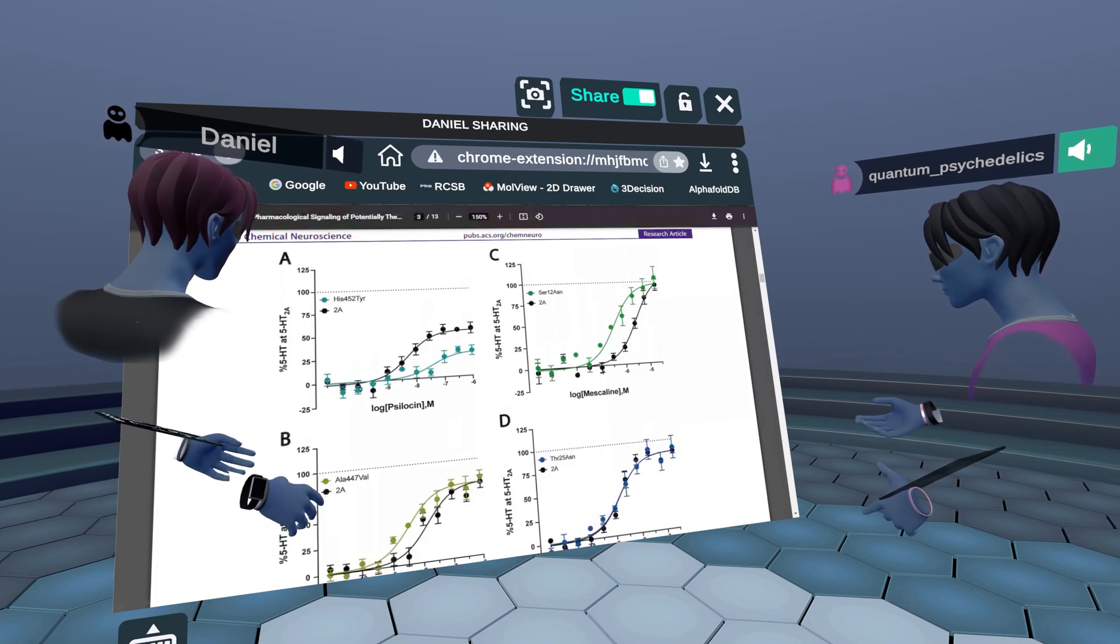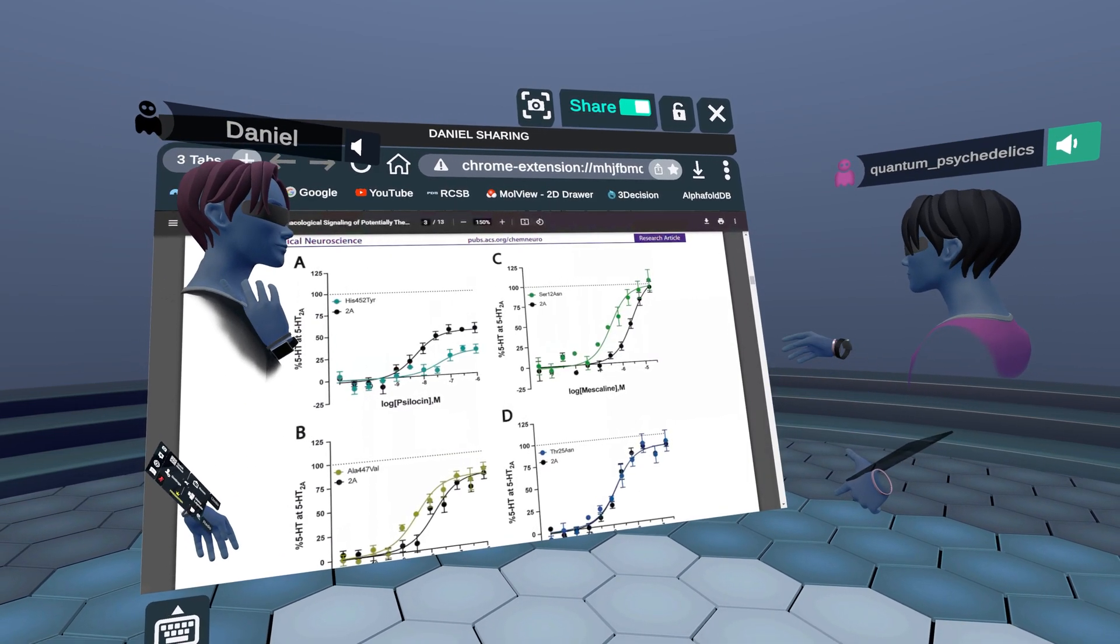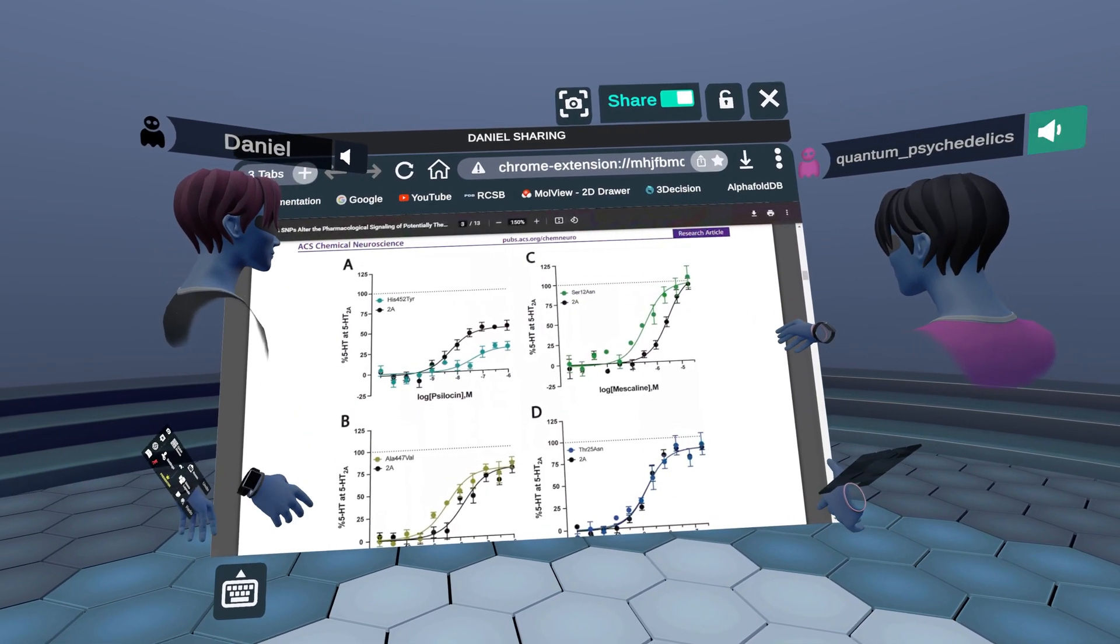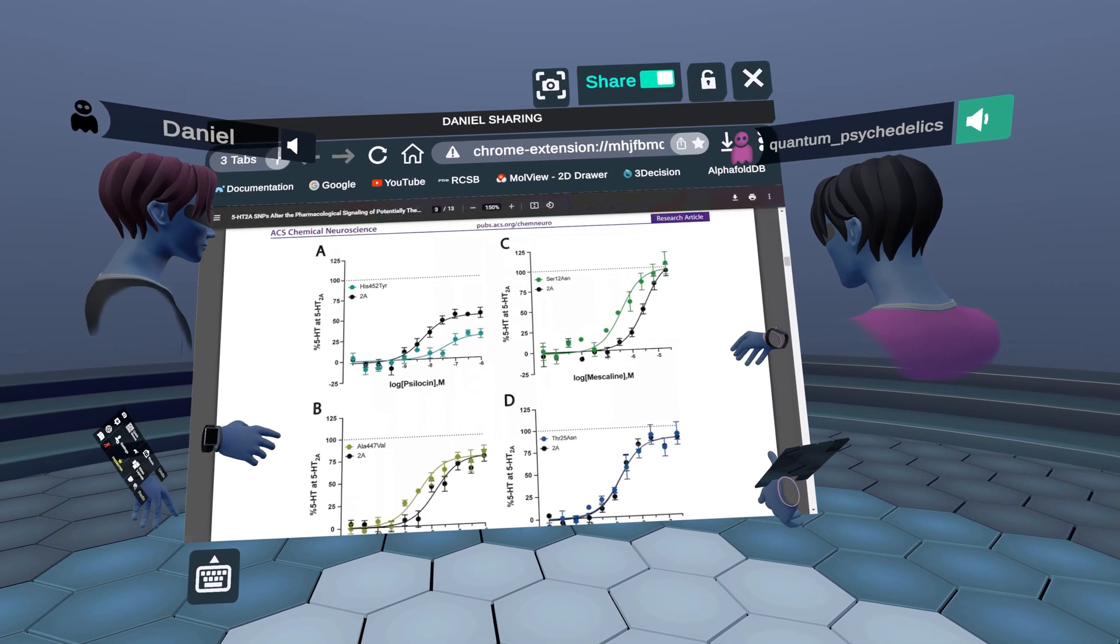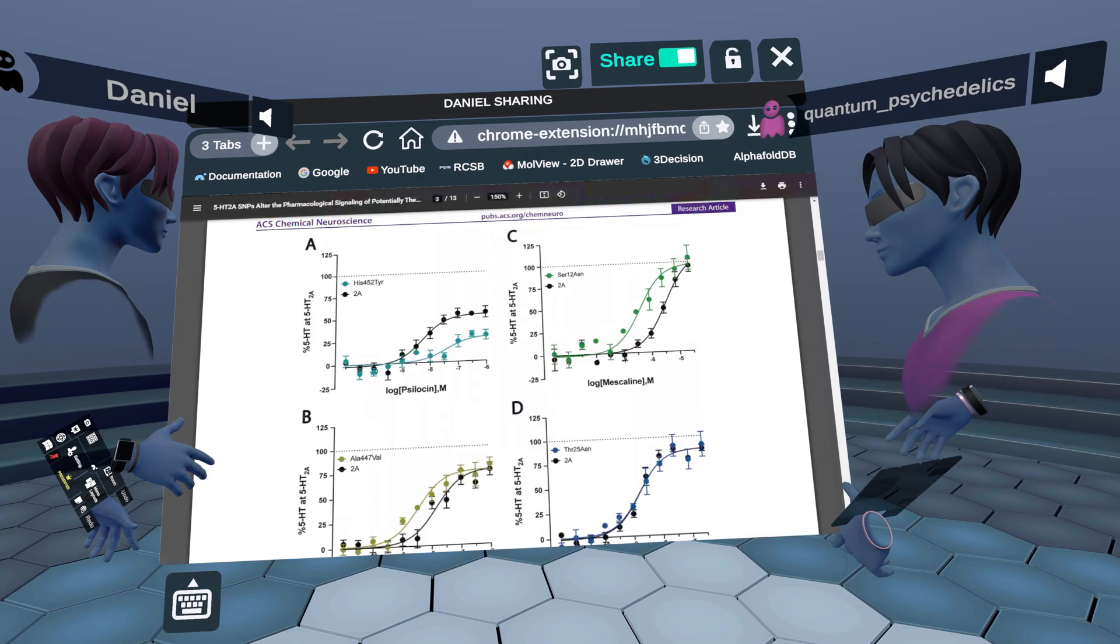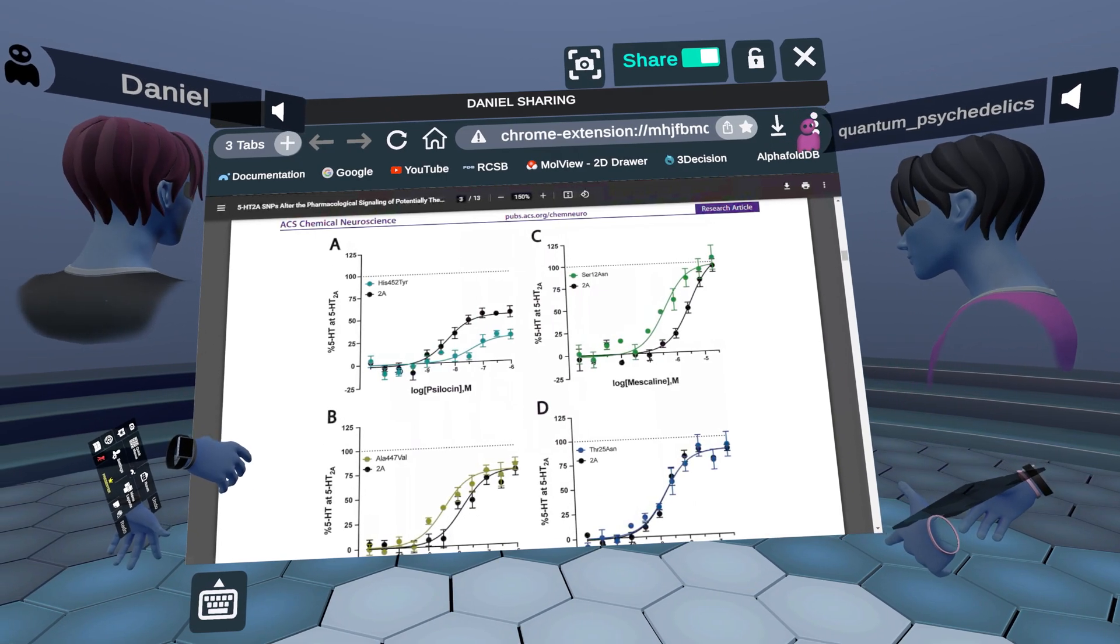And if we compare that, let's say, to just for example, serine 12, serine 12 asparagine, notice how that mutation at mescaline when you have the drug, the potency actually increases.